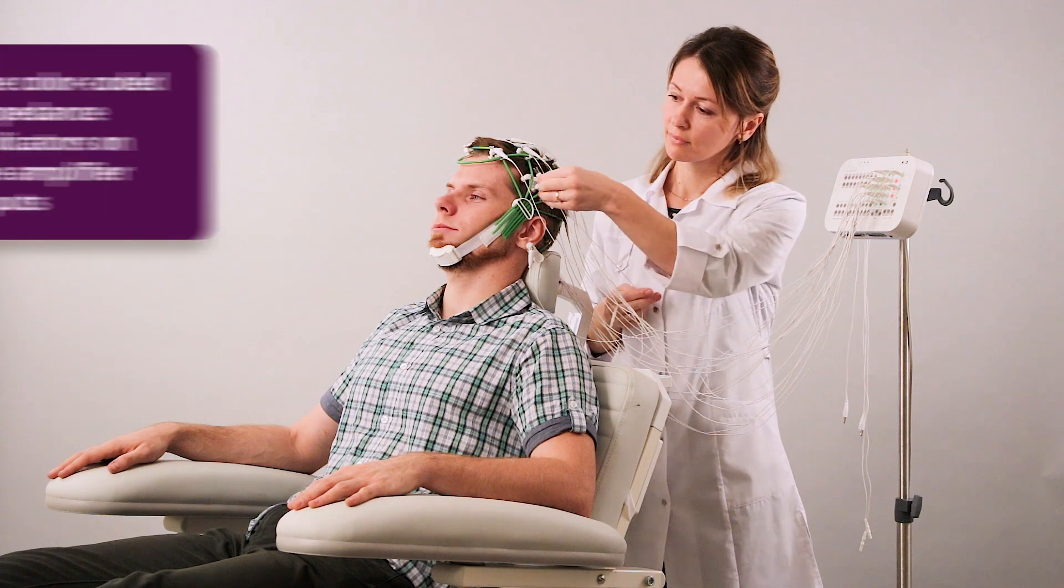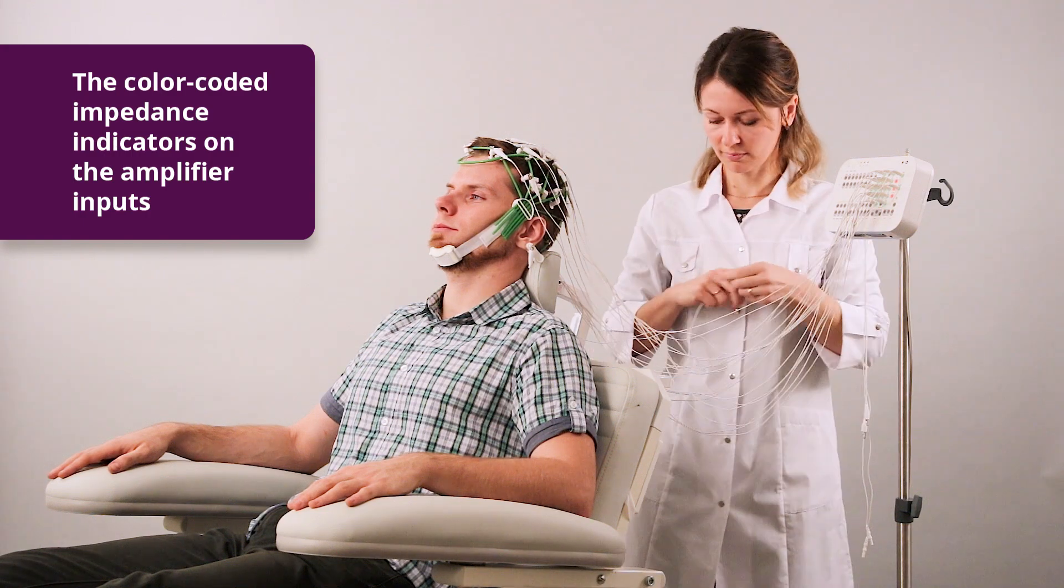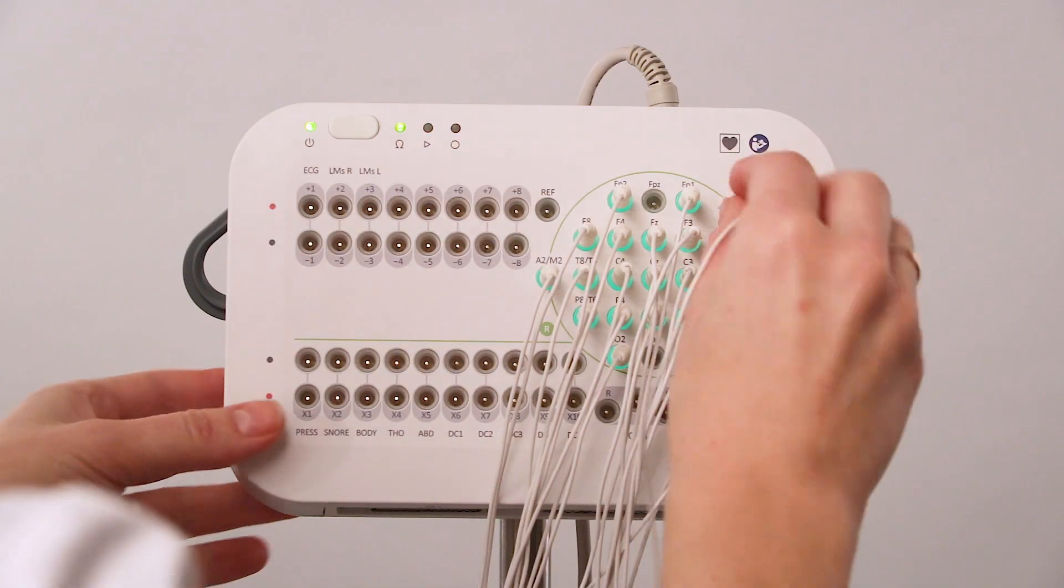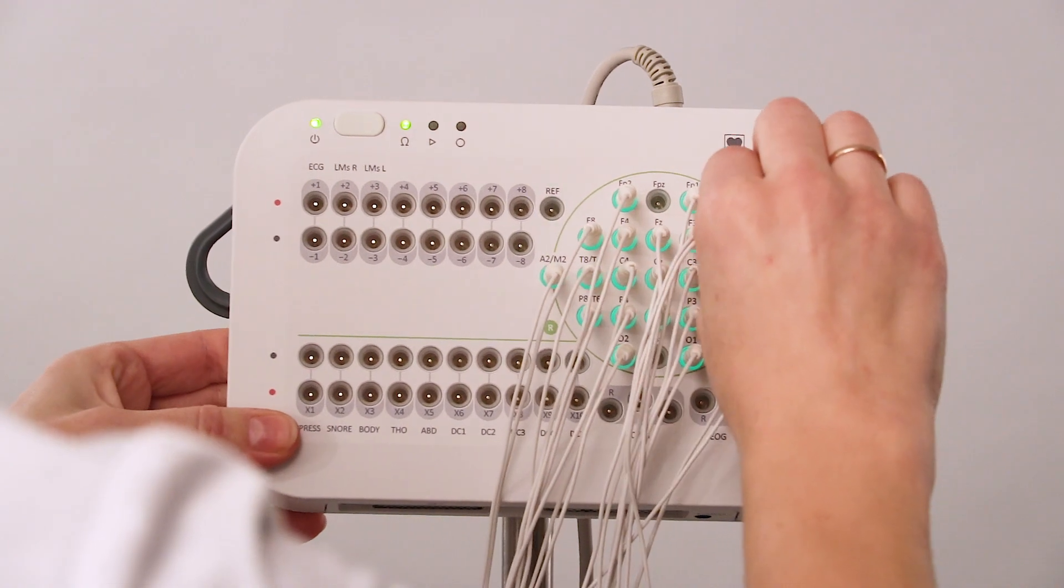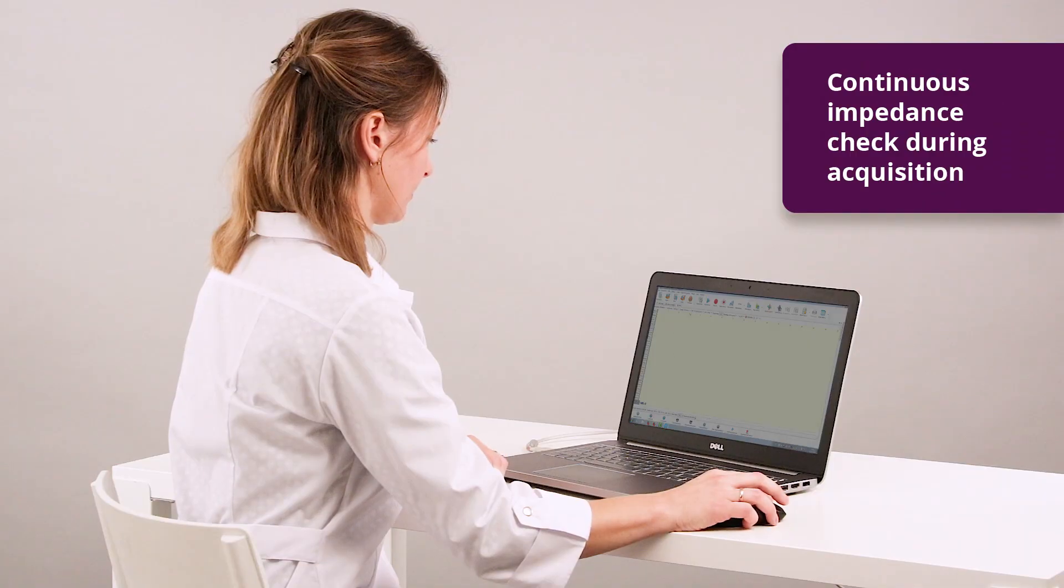The color-coded impedance indicators on the amplifier inputs help the specialist to assess the impedance quality during the acquisition and reposition the electrodes if necessary.